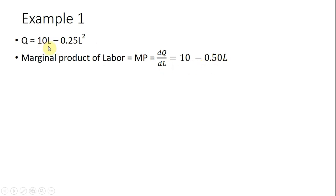So the derivative of 10L is just 10, and the derivative of 0.25L squared is just 0.5L. Bringing the two down in front, two times 0.25 gives us 0.5. And then we subtract one from the exponent here, and we're just left with L.